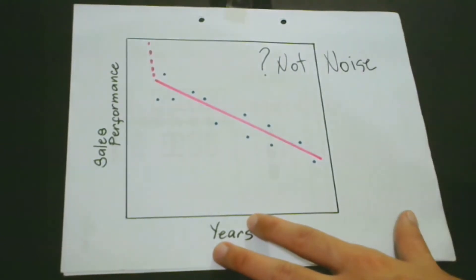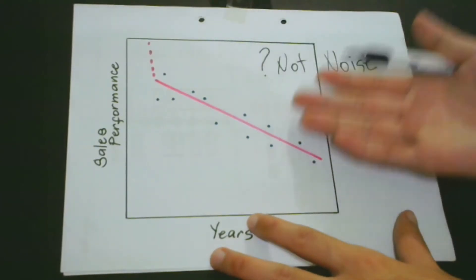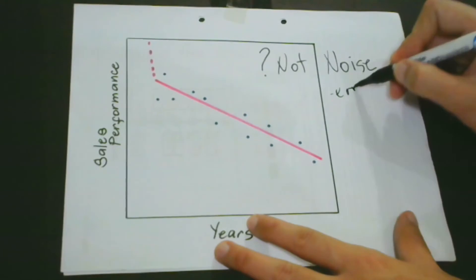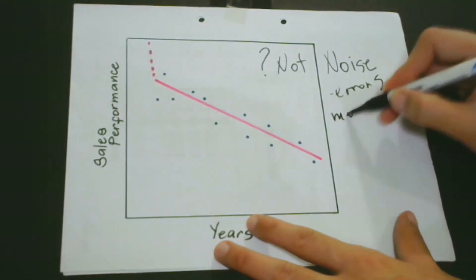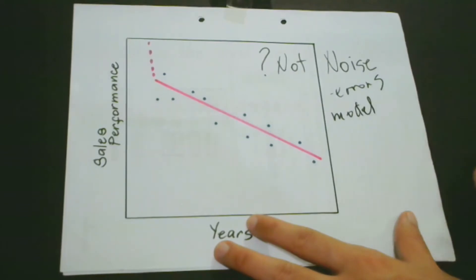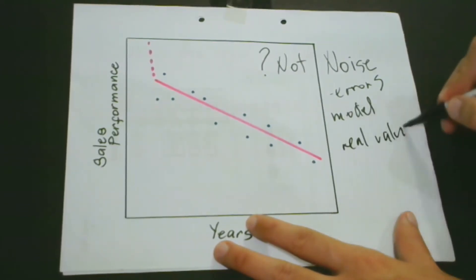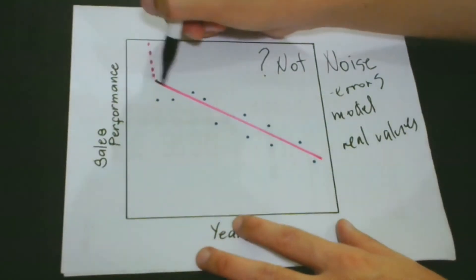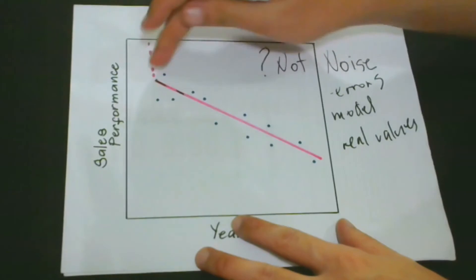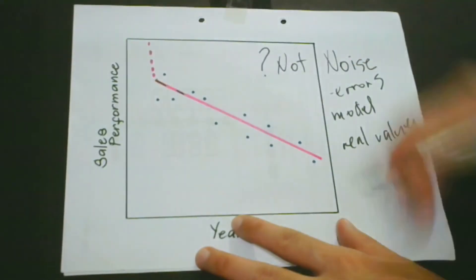In machine learning, when we say noise, these are errors. Errors between the model and the real values. As you can see, this is our model, the line of our model, the pink one, and these are the real values, the points here.